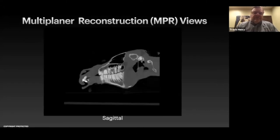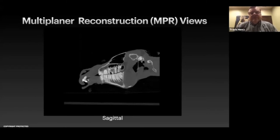The next plane is the sagittal view, where we're slicing the horse's head longitudinally. This can be used to look at all the teeth together, to look for diastemata between teeth, and to look for horizontal and vertical bone loss when evaluating periodontal disease. This view is made through multi-planar reconstruction.